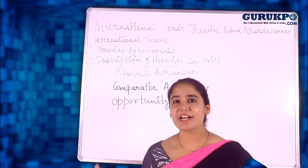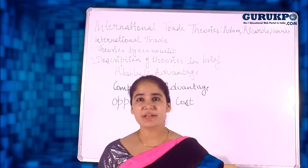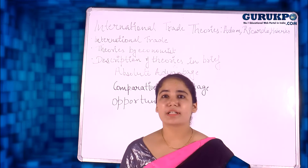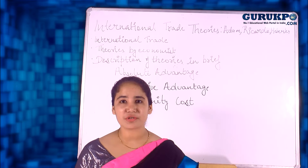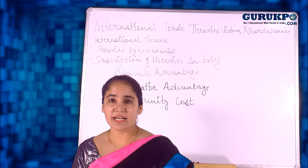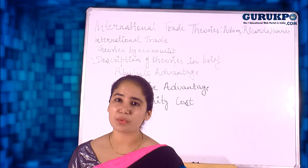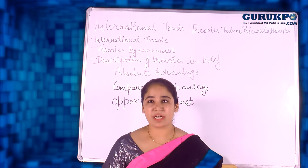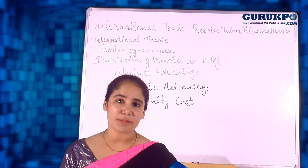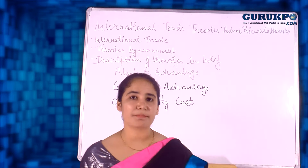In order to improve the Ricardian theory, Haberler came into view. He wanted to explain international trade theory with the help of opportunity cost. In whichever good a country has less opportunity cost, it would prefer to export that good. And where there is more opportunity cost, it would prefer to increase imports of that particular good.